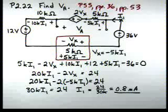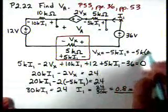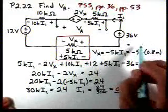So now VX is minus 5Ki1 times 0.8 milliamps. So VX is minus 4 volts.